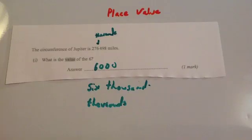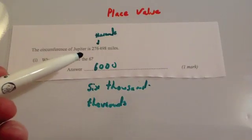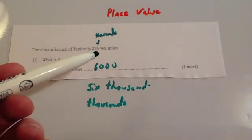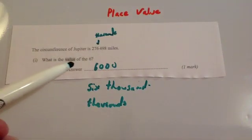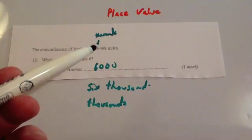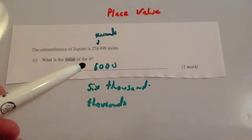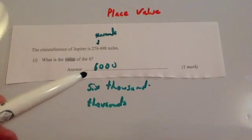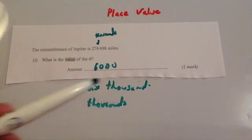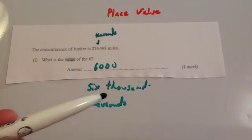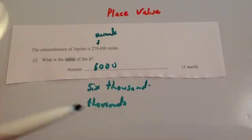Here's a typical exam question: the circumference of Jupiter is 276,498 miles, what is the value of the 6? If you notice, the 6 is in the thousands column, so the answer would be six thousand, or six thousand in words, or you could even write thousands because it's in the thousands column.